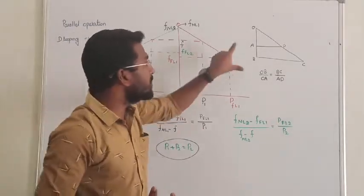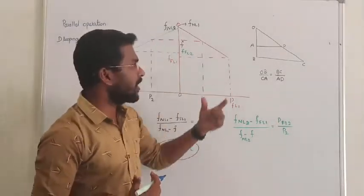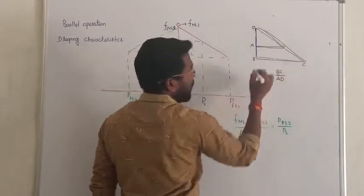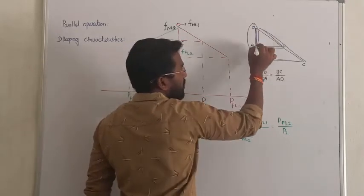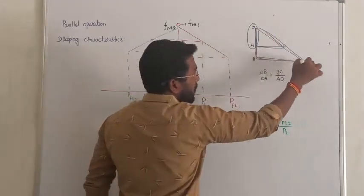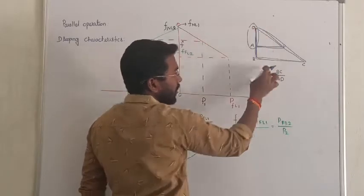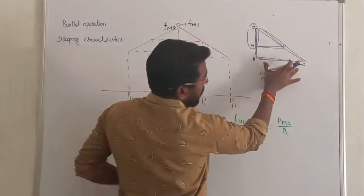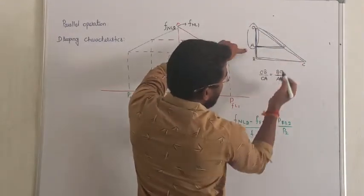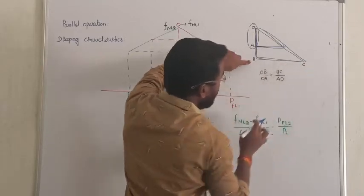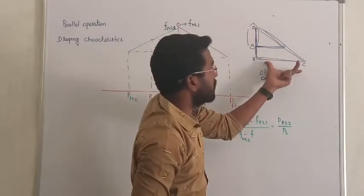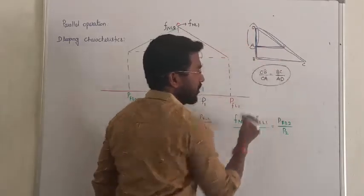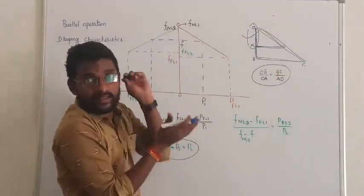We are going to use similar triangle logic. If two triangles are similar, their side ratios are equal. The larger triangle has side OB and the smaller triangle has side OA. OB divided by OA equals the ratio of the other sides: larger triangle side BC divided by smaller triangle side AD. These two ratios are always equal when we have similar triangles.